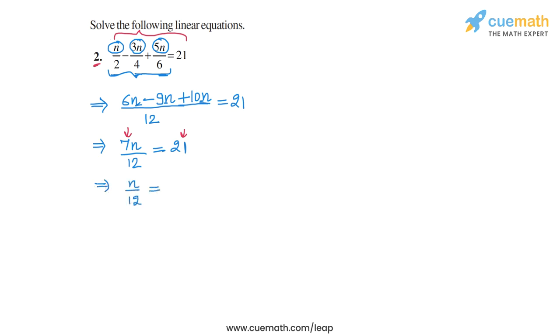And on the right side, we will have 21 divided by 7. And 21 divided by 7 is 3. So we will get n/12 is equal to 3.